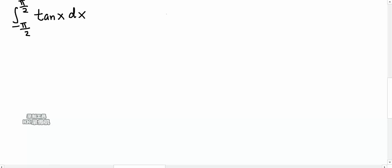We all know what the graph of tangent x looks like. There is a vertical asymptote for every pi by 2 plus pi n, where n is an integer, but we're only looking for the interval negative pi by 2 to pi by 2.